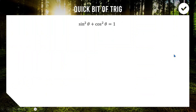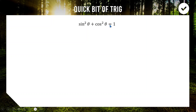Moving on to the next section, we're going to start talking about circular parametrics. To do that, we need the Pythagorean identity: sine squared theta plus cos squared theta equals one. This is an identity that holds true for any angle theta. If you take an angle, put it with sine and cos, square them, add them together, the answer is always equal to one. It's a beautiful bit of trigonometry.